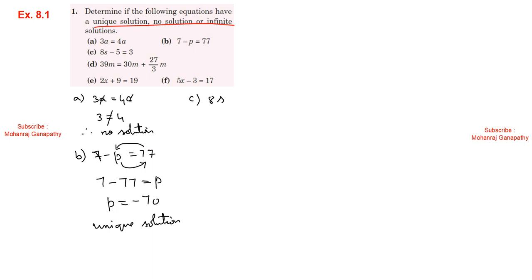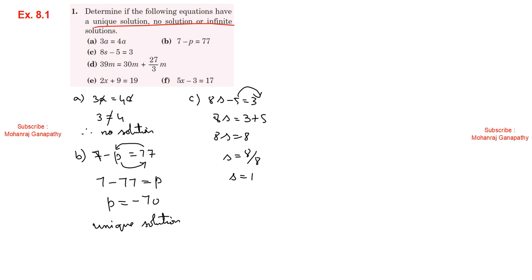Part c: 8s minus 5 equals 3. We group unknowns on one side and knowns on the other. So 3 plus 5 gives 8s equals 8. Then s equals 8 divided by 8, so s equals 1. Therefore it has a unique solution.